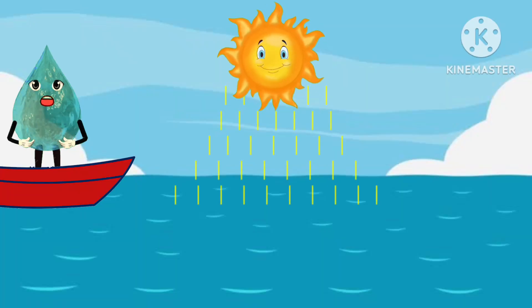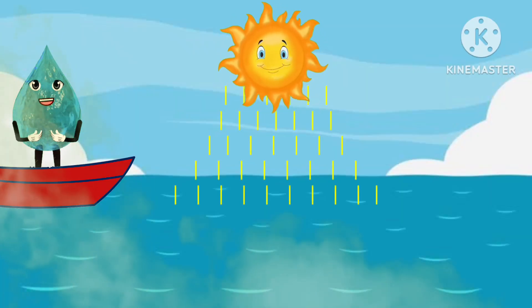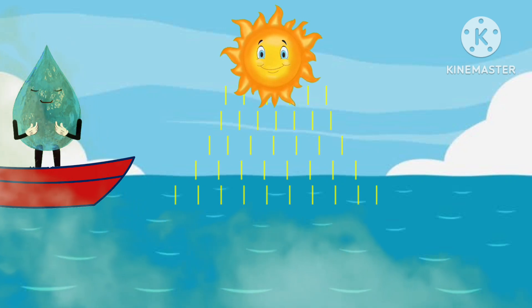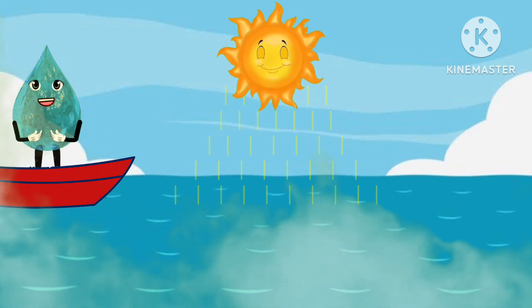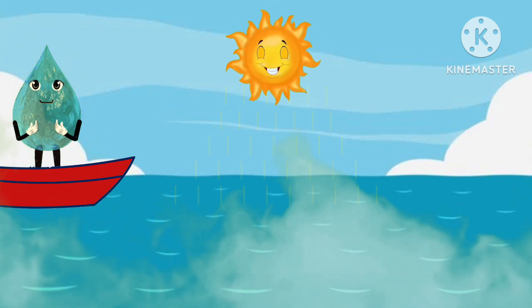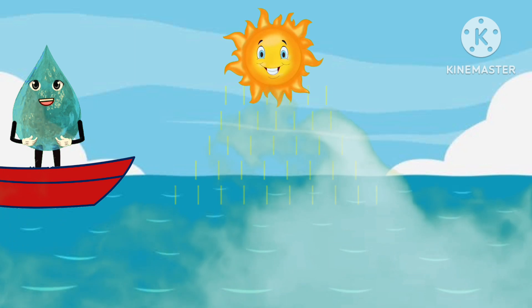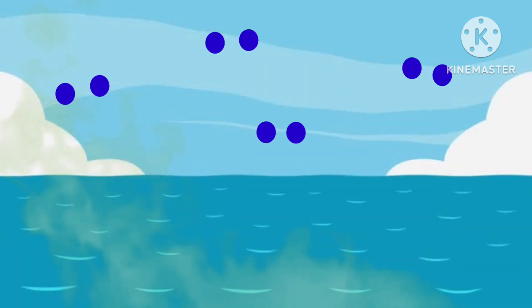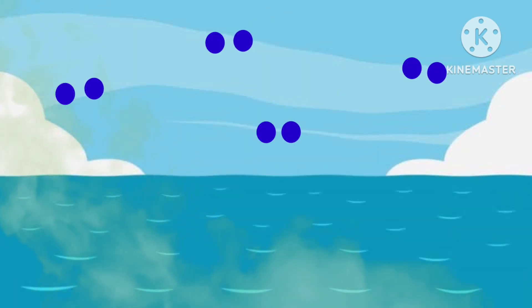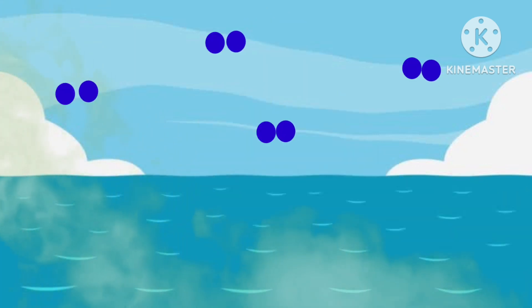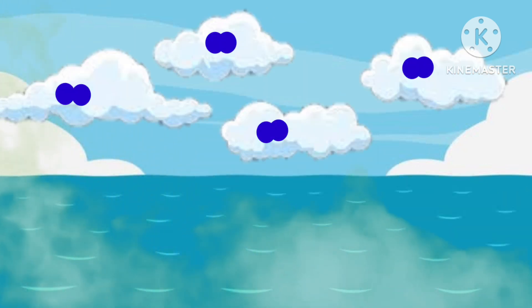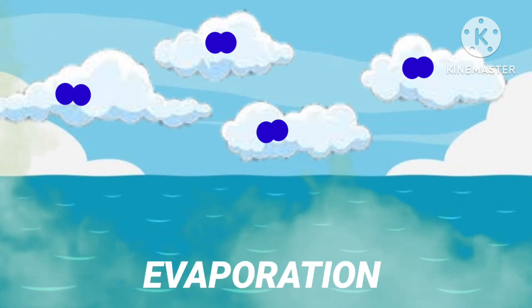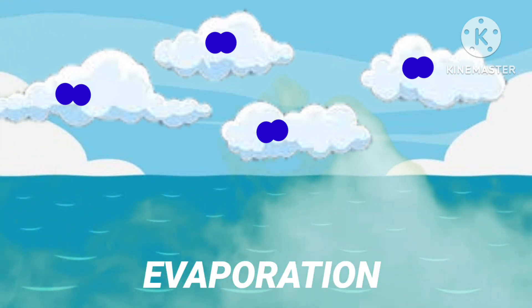The warmth of the sun causes water in the river, ocean, and sea to rise up into the air and turn into water vapor. Then the water vapor droplets join together to form clouds. This whole process is called evaporation.